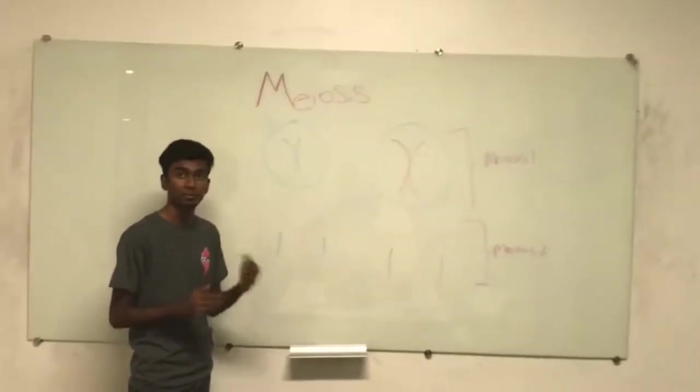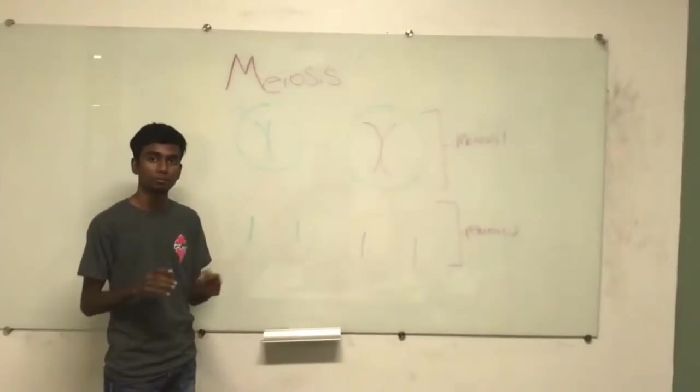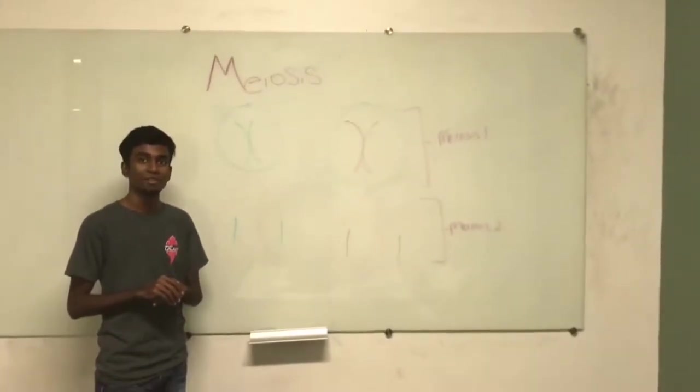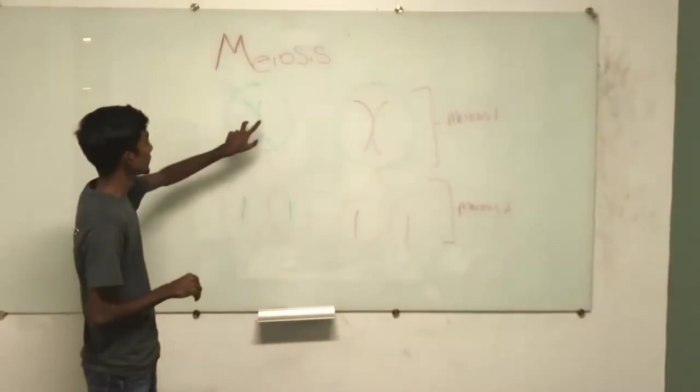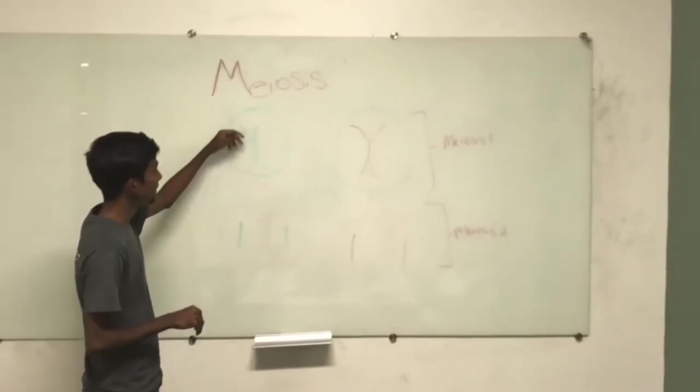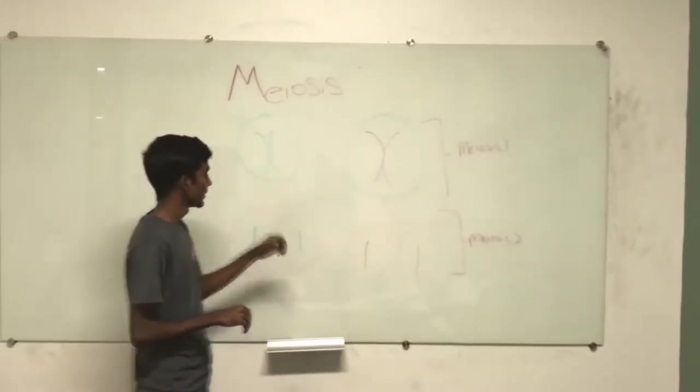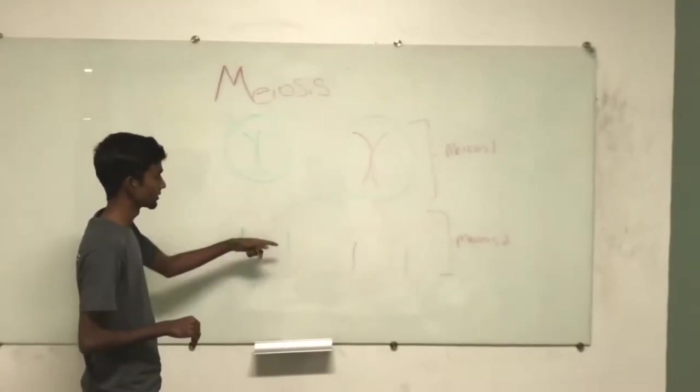And then there's also anaphase 1, where homologous chromosomes are separated. So as you can see here, there's a sister chromatid and sister chromatid, and they become single chromatids.